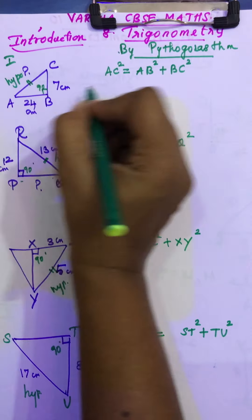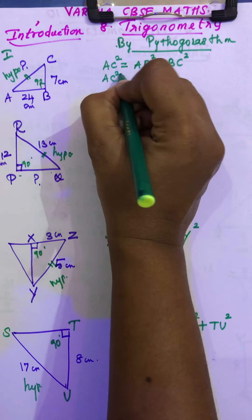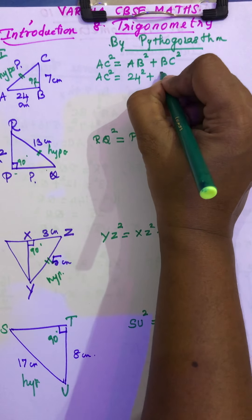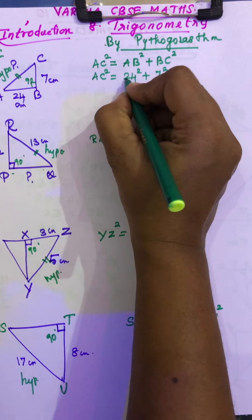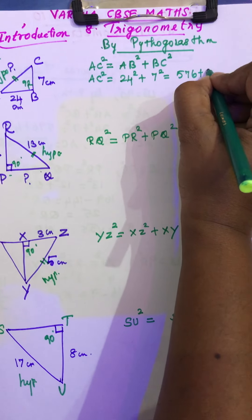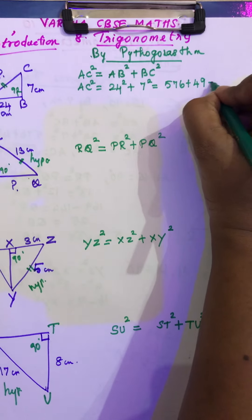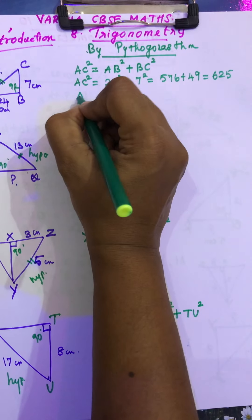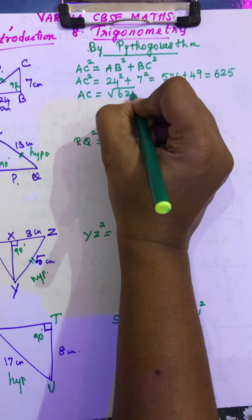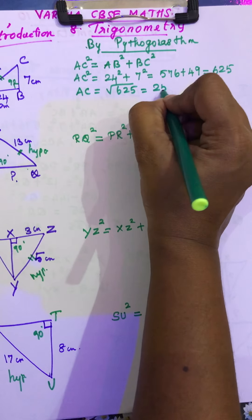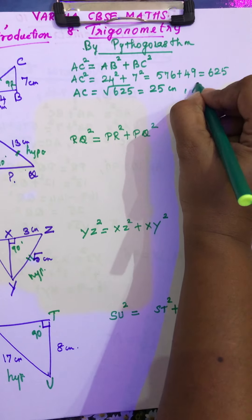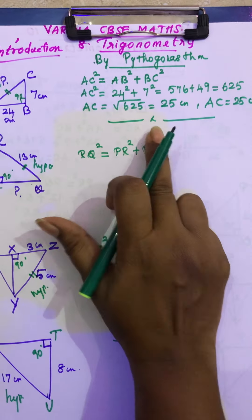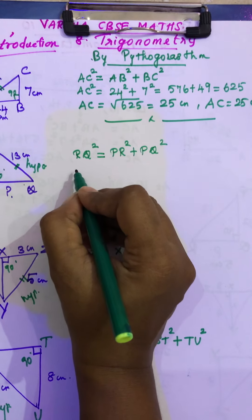Now go to the first triangle. AC is not given, so we keep it as is. AB = 24, so 24², and BC = 7, so 7². That is 576 + 49, which gives 625. This is a perfect square, so take the square root on both sides. The square root of 625 is 25. So AC, the hypotenuse, is 25 centimetres. Now go to the next triangle — the second triangle. RQ² = 13² = 169. PR = 12, so 12² = 144. PQ is not given. So PQ² = 169 − 144 = 25, and the square root of 25 is 5 centimetres.